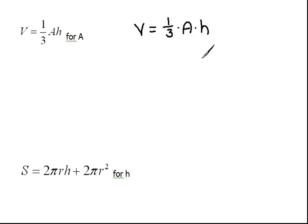The way we get rid of fractions is multiplying through by the common denominator. So if we were to multiply both sides by 3, look what would happen. 1/3 times 3 is 1. That's why we multiply by it. So now we have 3 times V is equal to A times H.